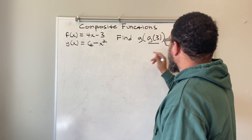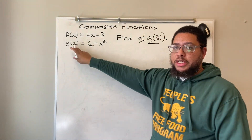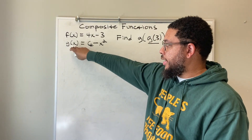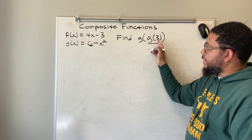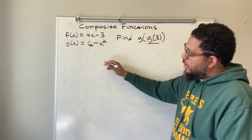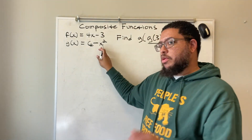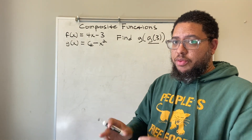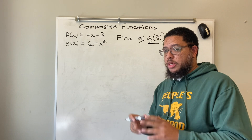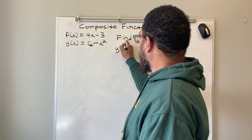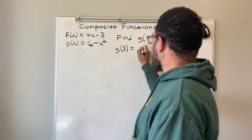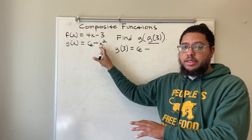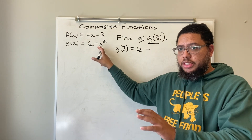The inside function is g of 3. That means we're taking the g function and replacing all x's with 3's. Wherever I see an x, I'm replacing it with a 3. So instead of saying g of x, it's saying g of 3 — right here where there's an x, I replace that with a 3. So first we're going to find out what g of 3 is equal to. I write my 6, I write my minus sign, and I don't write x because I replace all x's with 3's.